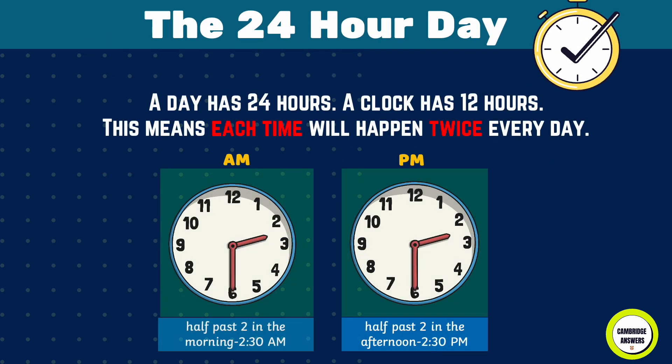A day has 24 hours but a clock only has 12, which means each time will happen twice every day. For example, half past two in the morning is 2:30 a.m., and half past two in the afternoon is 2:30 p.m.